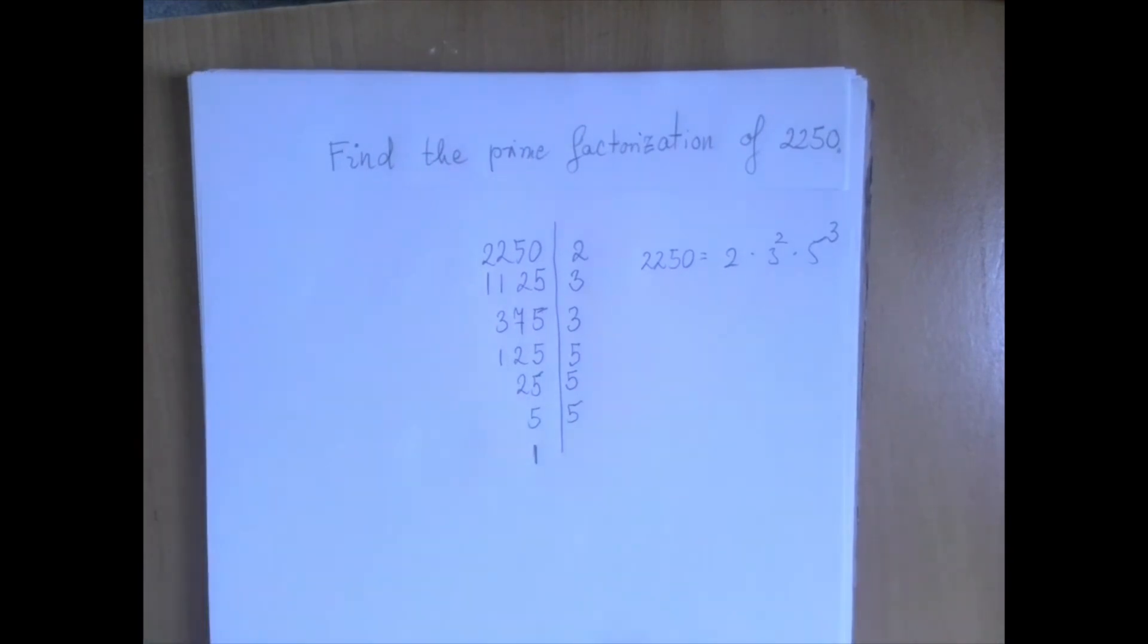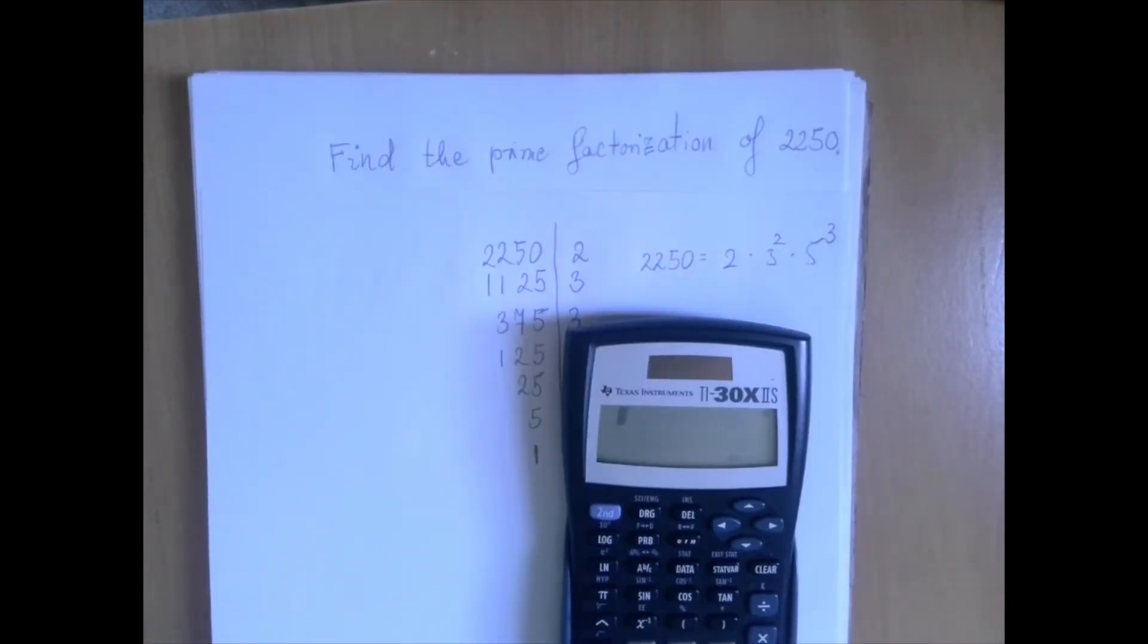We can check using the calculator. So 2 times 3 squared is 9, and we're just going to say 5 to the third power. And there it is.